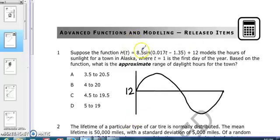And then the 8.5 in front is the amplitude. Well that tells us that from the 12, the maximum is 8.5 above the 12 and the minimum is 8.5 below the 12. So 12 plus 8.5 is 20.5, 12 minus 8.5 is 3.5. So the range is from 3.5 to 20.5.